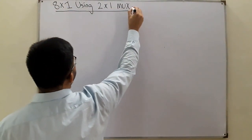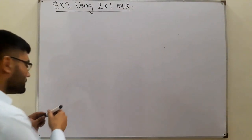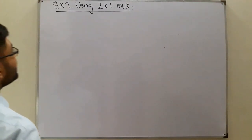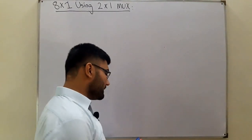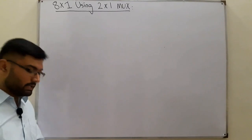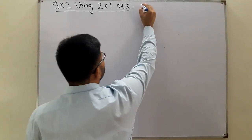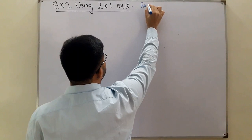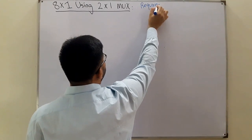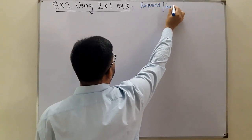You know the method from the previous video — if not, watch that first. We need to know about the required inputs and the available inputs, and then we divide: required inputs divided by available inputs.